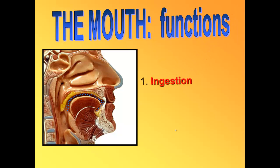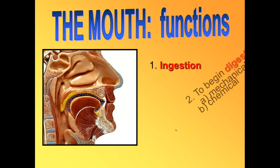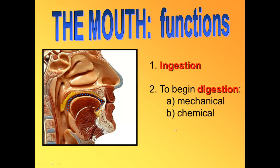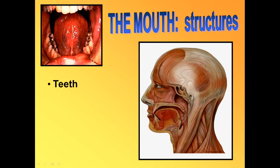We're going to start today talking about the mouth. The mouth is where ingestion occurs — we insert our food through our mouth. This is where we begin two types of digestion: mechanical digestion, which is just breaking big pieces of food into smaller pieces, and chemical digestion, which is breaking the bonds between larger molecules. In the mouth, the only chemical digestion that happens is the chemical digestion of starch.